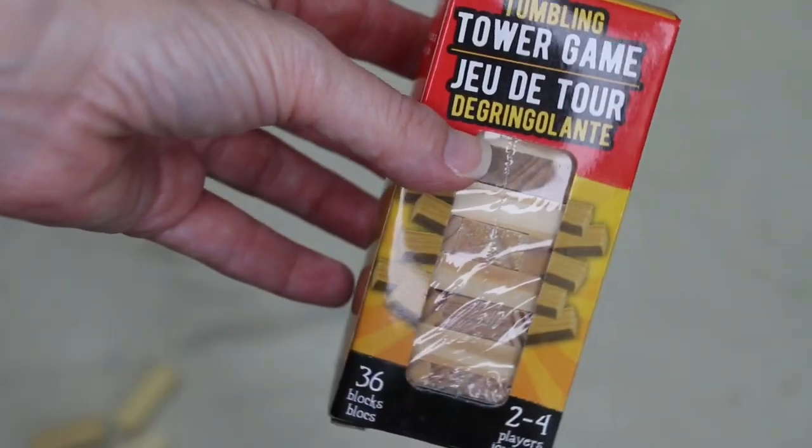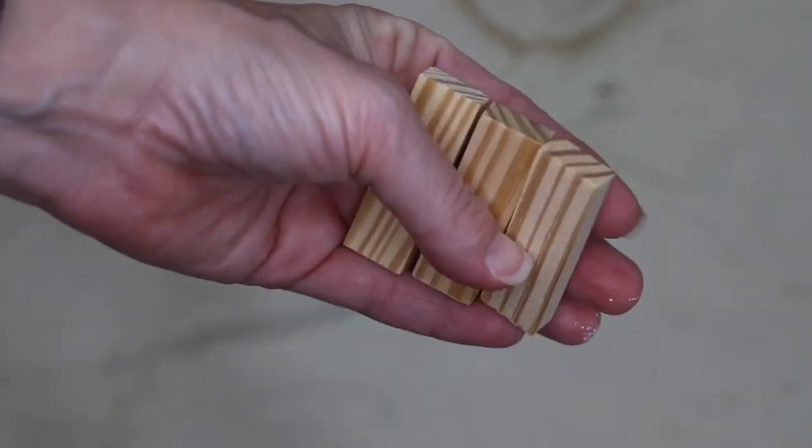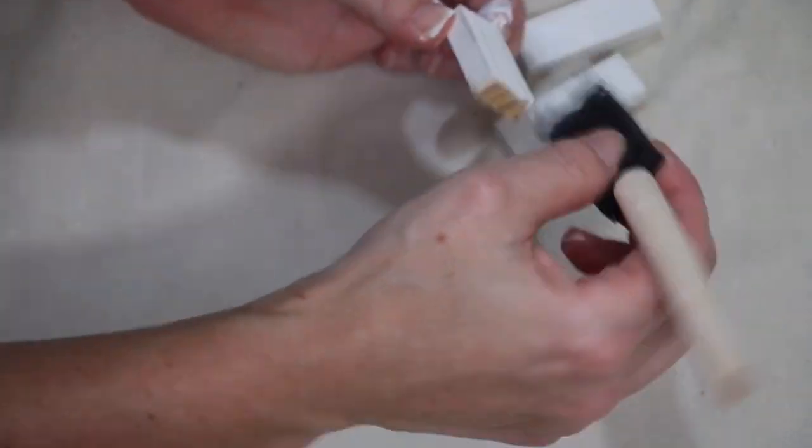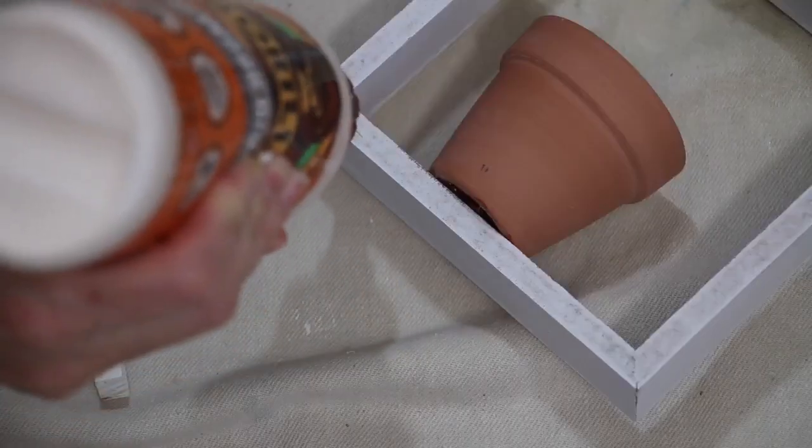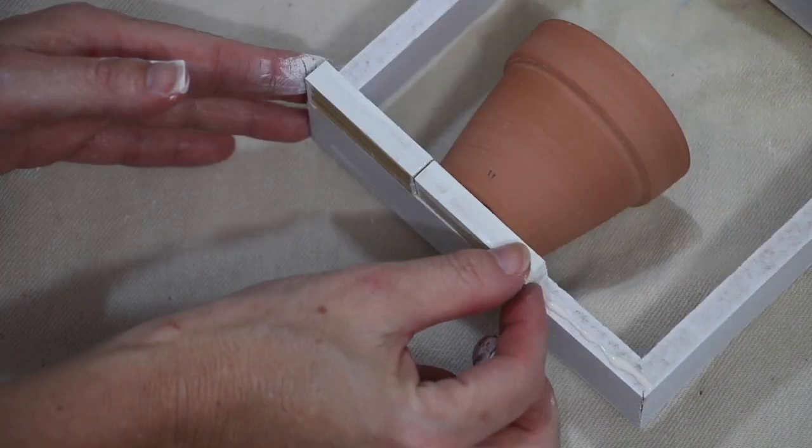To fix my wobbly problem, I'm taking this tumbling tower game and three pieces of that and I paint them in the Waverly chalk paint and plaster.